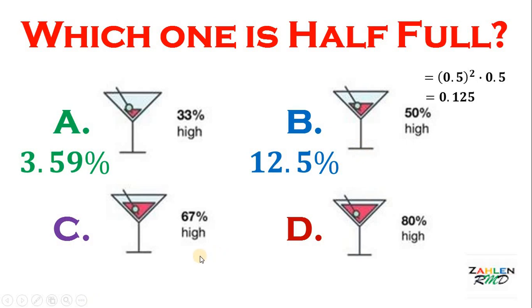How about letter C? Is it half full? Let's see. We have 0.67 cubed or simply 0.67 squared times 0.67. Now simplify and we get 0.300763 or about 30.07%. So still, letter C is not half full. Now if your answer is letter C, now you know that this is not half full.